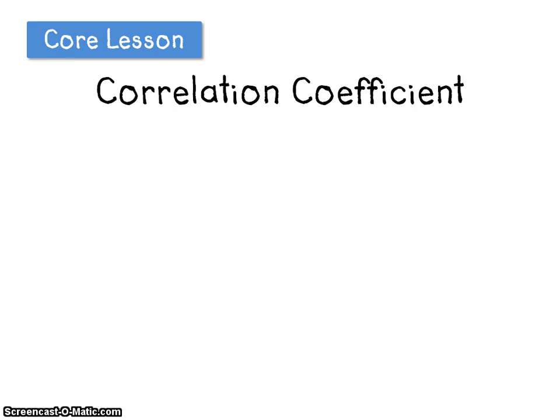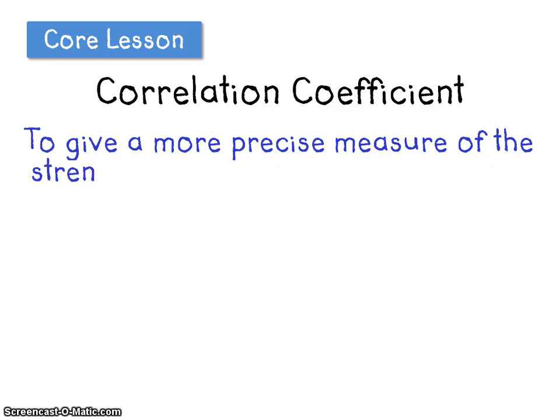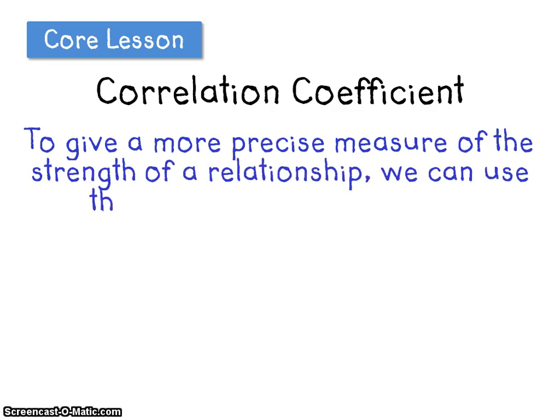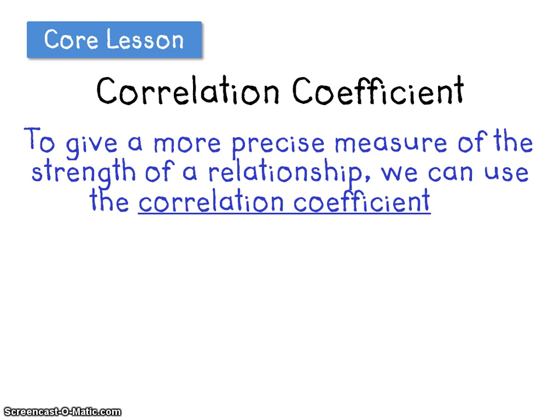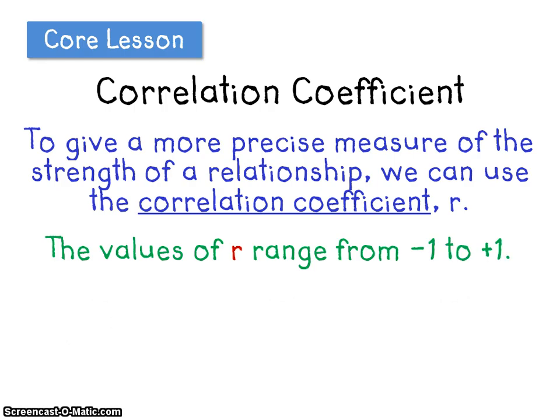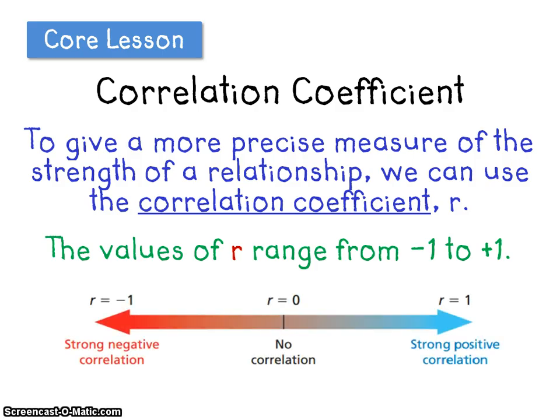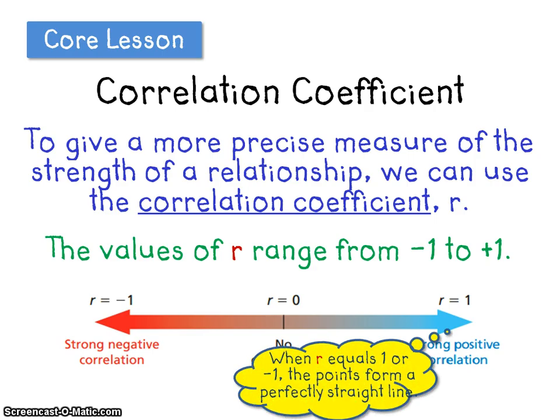Let's talk about correlation coefficient, because that's what tonight's video is all about. To give a more precise measure of the strength of a relationship, we can use the correlation coefficient known as R. The values of R range from negative 1 to positive 1. This diagram shows you the range of values of R and what those values suggest. As the correlation gets weaker, the value of R will get closer to 0. And when R is equal to 1 or negative 1, the points form a perfectly straight line.